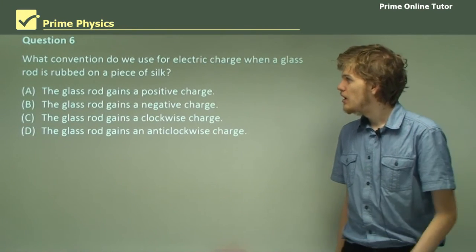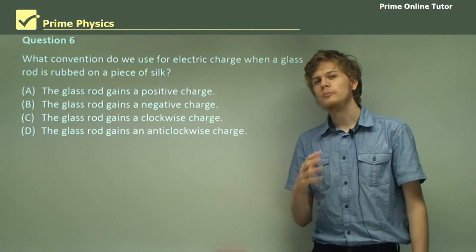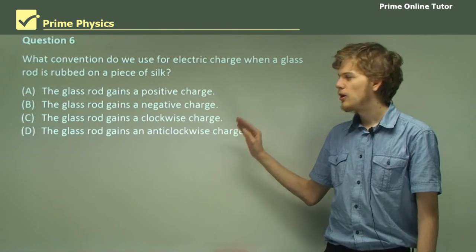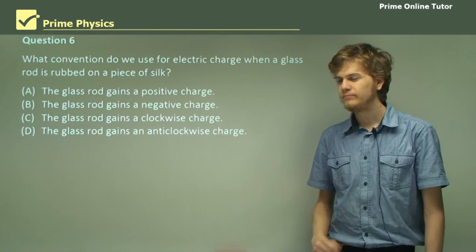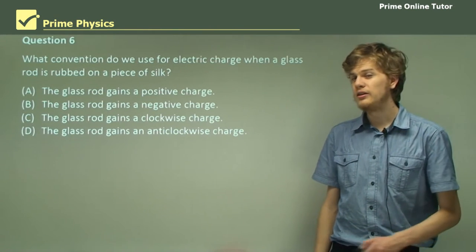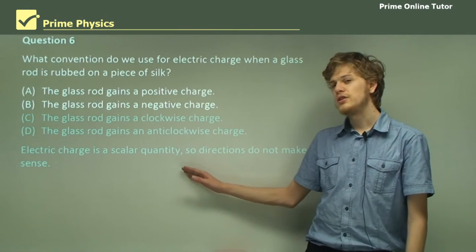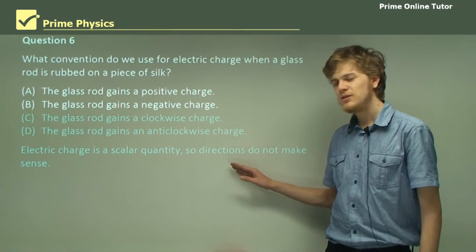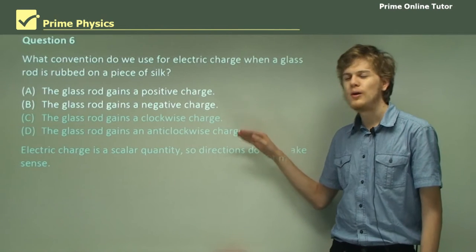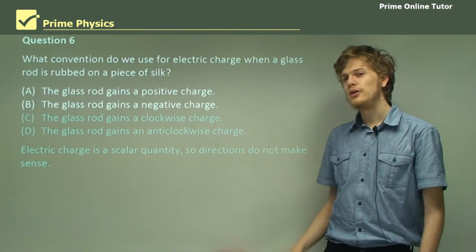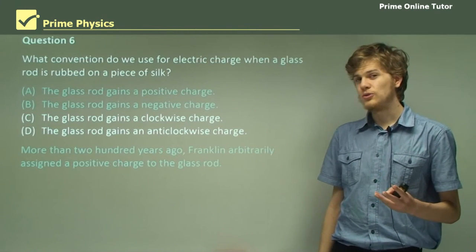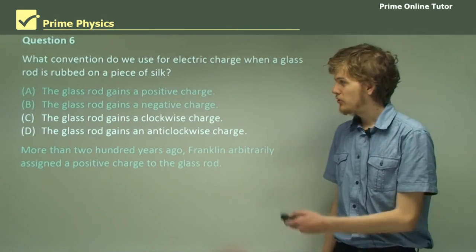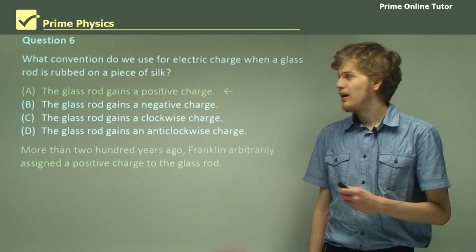Question 6: What convention do we use for electric charge when a glass rod is rubbed on a piece of silk? Do we say the glass rod gains a positive charge, a negative charge, a clockwise charge, or an anti-clockwise charge? Right away we can see it's not C or D — electric charge is a scalar quantity, a number, and it doesn't point in any direction, so directions don't make sense. Our options are a positive charge or a negative charge. Benjamin Franklin was the one who arbitrarily decided, and the one he picked was saying that the glass rod gains a positive charge.